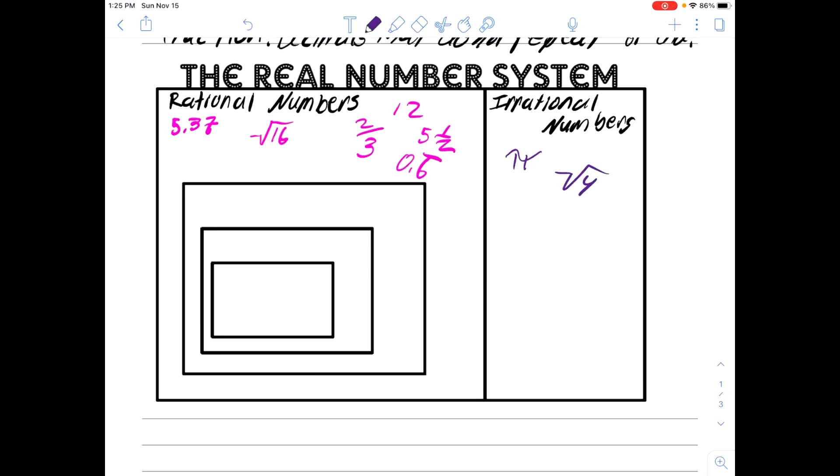This could also be a number like the square root of 41. 41 doesn't have a nice whole number that multiplies by itself to 41, so if you do this on a calculator, you get 6 point a whole bunch of numbers that never repeat and never end. And there are lots of numbers that are like this. But the important thing to remember is that it's any decimal that never repeats or ends.